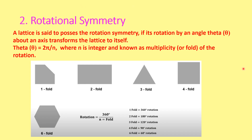Now we will discuss rotational symmetry. A lattice is said to possess rotational symmetry if, after rotating a crystal along its center axis, it repeats the same structure. The angle of rotation is 2π/n, where n is an integer known as the multiplicity of the rotation. Only 1-fold, 2-fold, 3-fold, 4-fold, and 6-fold rotations are possible.